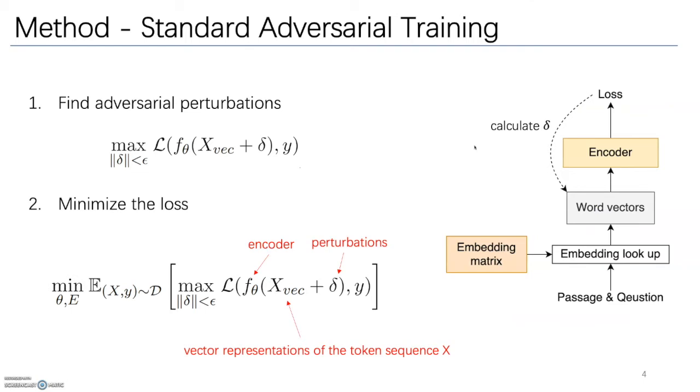To begin with, let's recap the standard adversarial training. In the standard AT, for each step, we first find the perturbation delta that is added to the input and maximizes the current loss under certain constraints.